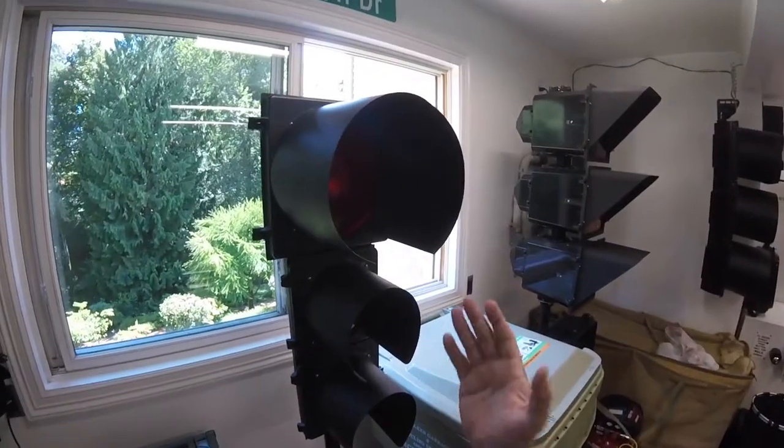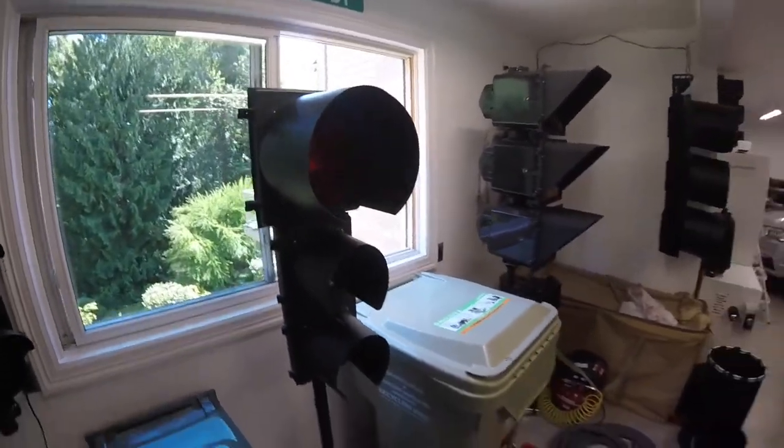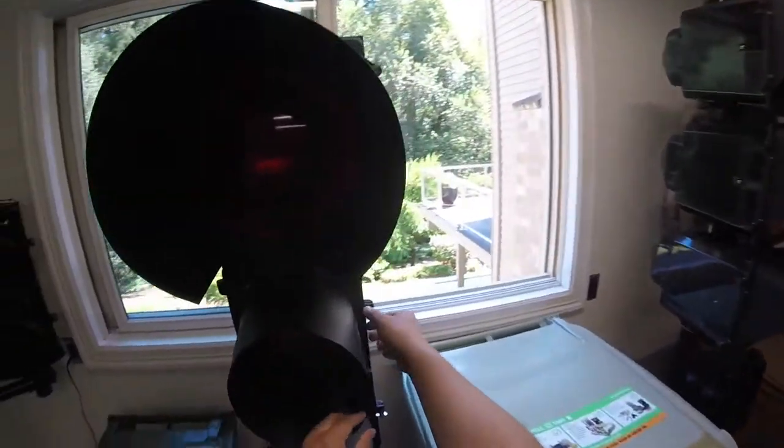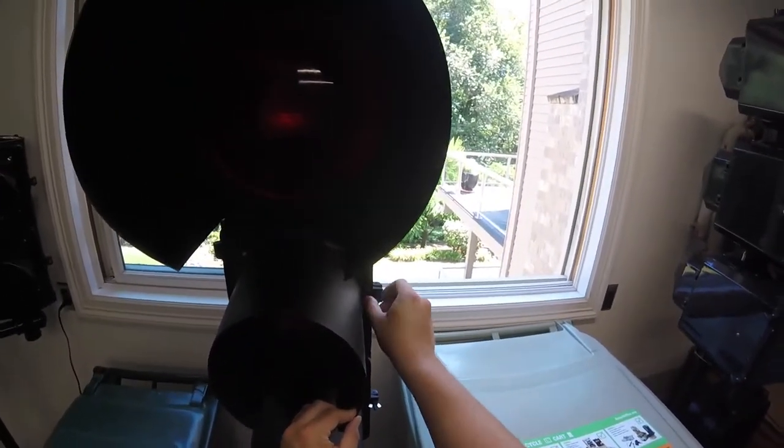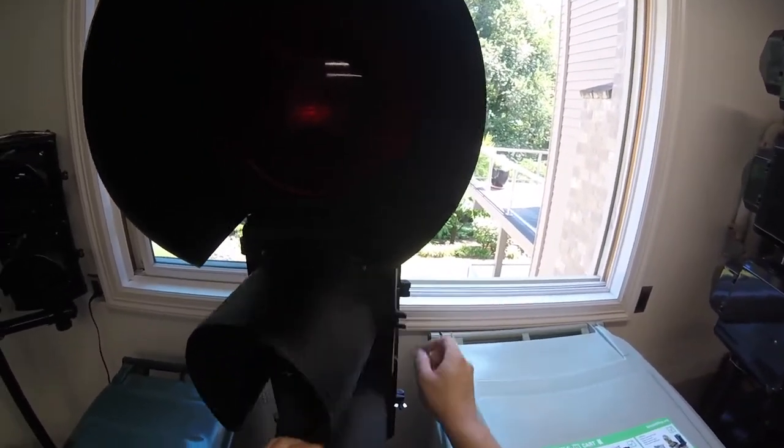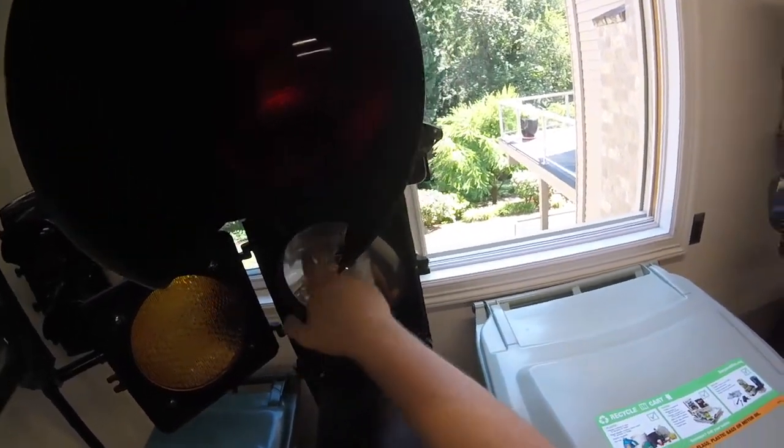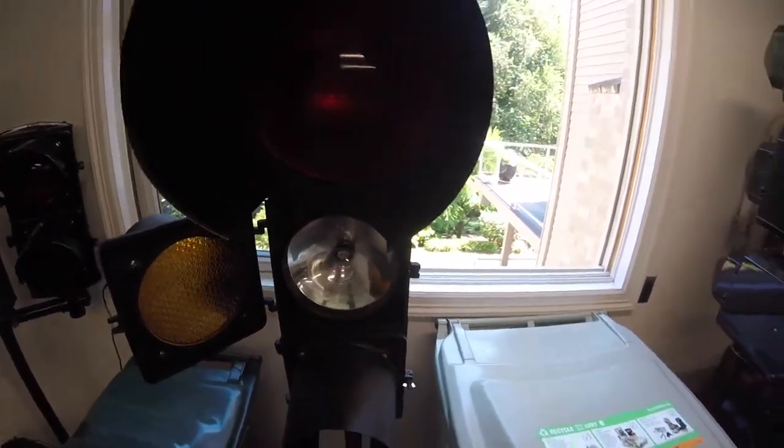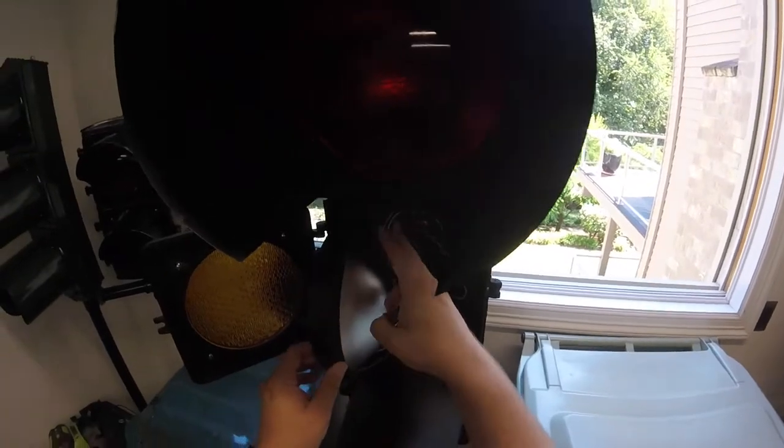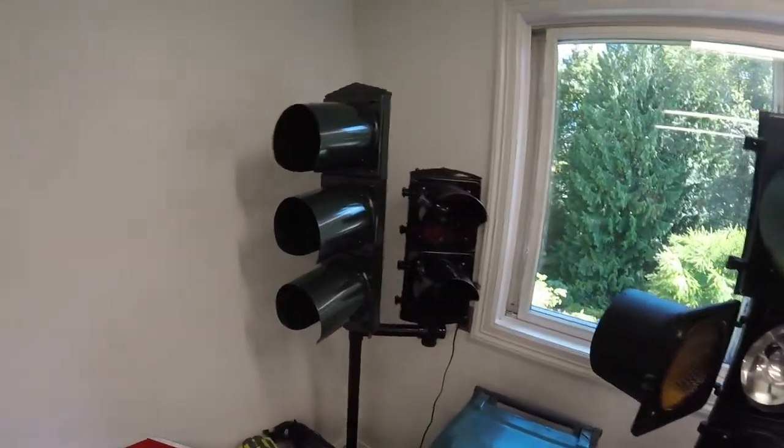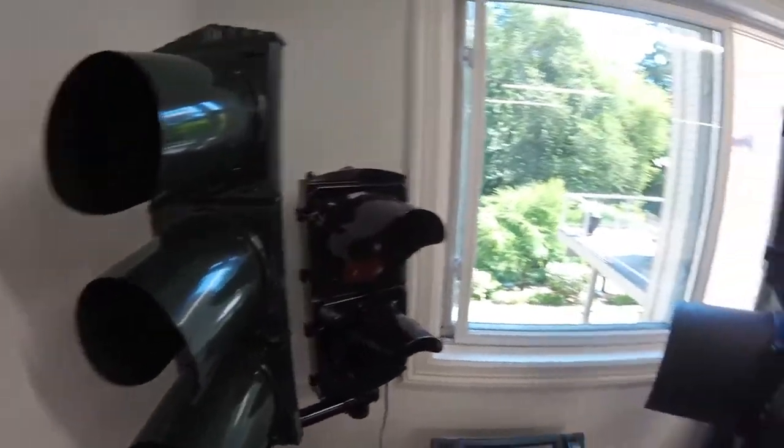Now the lenses I showed you here are polycarbonate and glass. The reflectors behind them were aluminum material called Alzak, A-L-Z-A-K. I'll pop this open real quick to give you an idea. You can see it's just a simple aluminum, really nothing to it.